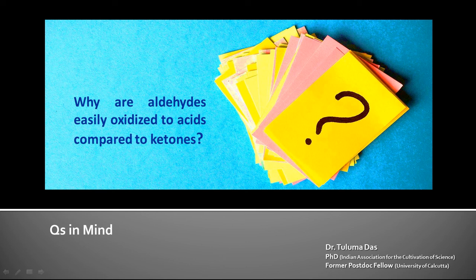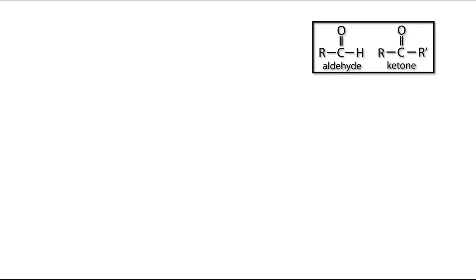Today's question: why are aldehydes easily oxidized to carboxylic acids compared to ketones? First we have to know what is the structure of aldehyde and ketone and what is the basic difference. In both cases we have a carbonyl group, but in an aldehyde one side has hydrogen, whereas in a ketone you do not have any hydrogen — both sides have an R group.